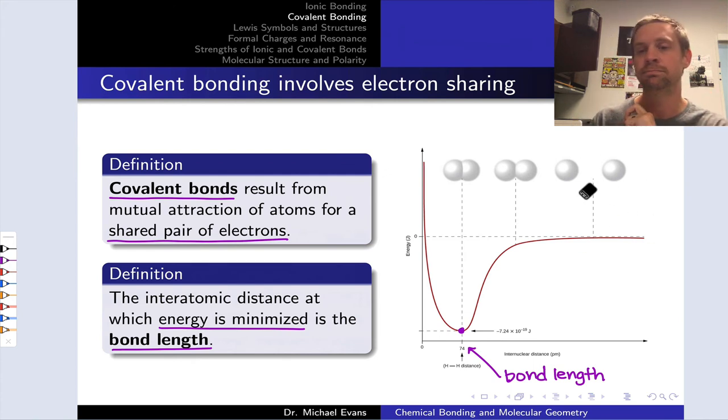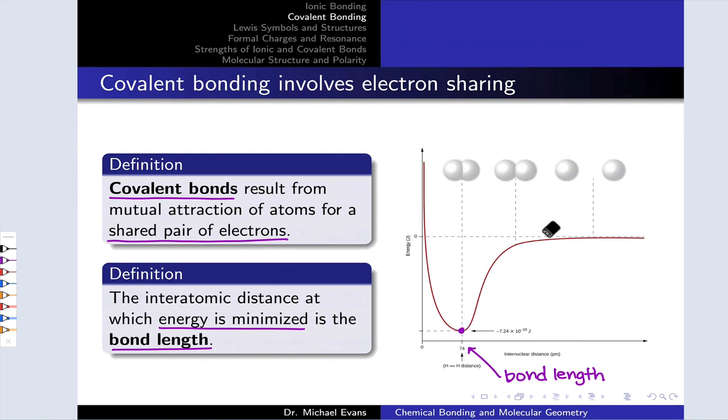As I bring those closer together and decrease this internuclear distance, the distance between the nuclei, the energy of that pair of atoms goes down until I reach a minimum, at which point we can say that the atoms are at their equilibrium bond length, usually just called the bond length. For hydrogen, it's 74 picometers. At that point, pushing the atoms closer together results in an increase in energy because now the electron clouds are starting to repel one another. At the equilibrium bond length, we've minimized the energy by balancing essentially that attraction of the electrons to the nearby nuclei and the electron-electron repulsion that begins to build in as the atoms approach one another. That kind of ideal point, this minimum on a graph of the internuclear distance and the energy, is called the bond length.